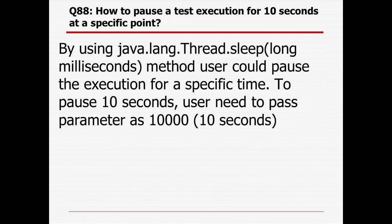How to pause test execution for 5 or 10 seconds at a specified point: we need to use Thread.sleep() with milliseconds. Using java.lang.Thread.sleep(long milliseconds), the user can pause execution for a specified time. To pause 10 seconds, pass 10000 milliseconds. Generally in normal framework execution we should not use Thread.sleep because it will always wait the full timeout. However, when debugging code — if an error is occurring and you cannot validate whether the next step or object identification is working — Thread.sleep helps for 2-3 seconds, but for normal execution it should not be used.